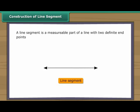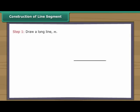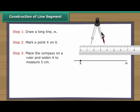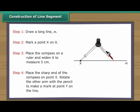Construction of Line Segment. A line segment is a measurable part of a line with two definite end points. We use a ruler and a compass to construct a line segment. Let us construct a line segment five centimetres long. Draw a long line M and mark a point X on it. Place the compass on a ruler and widen it to measure five centimetres. Place the sharp end of the compass on point X. Rotate the other arm with the pencil to make a mark at point Y on the same line. We have a line segment XY which is five centimetres long.